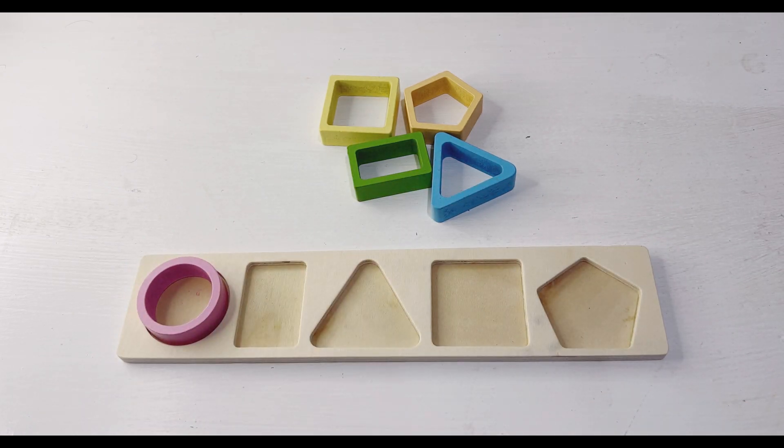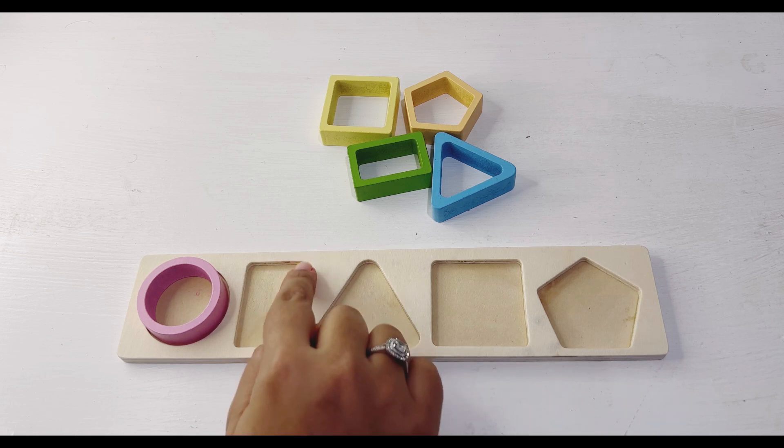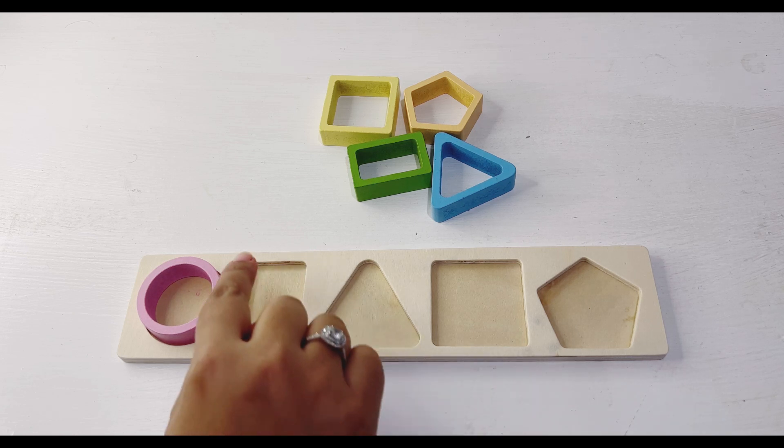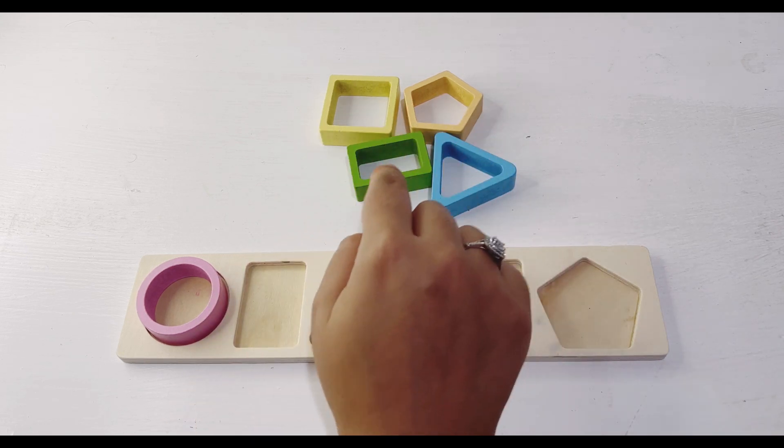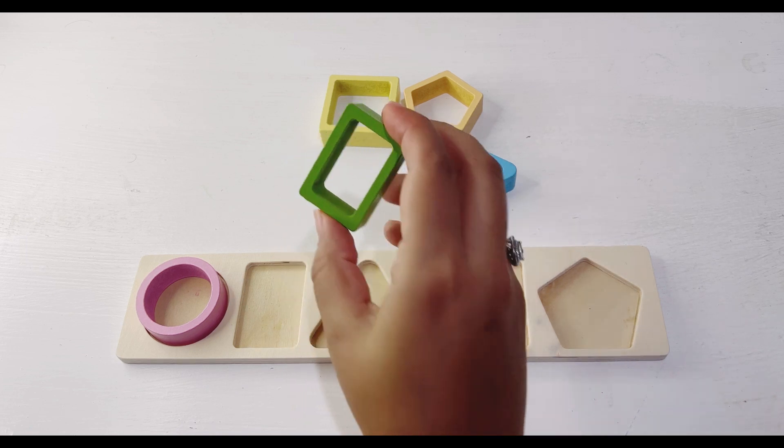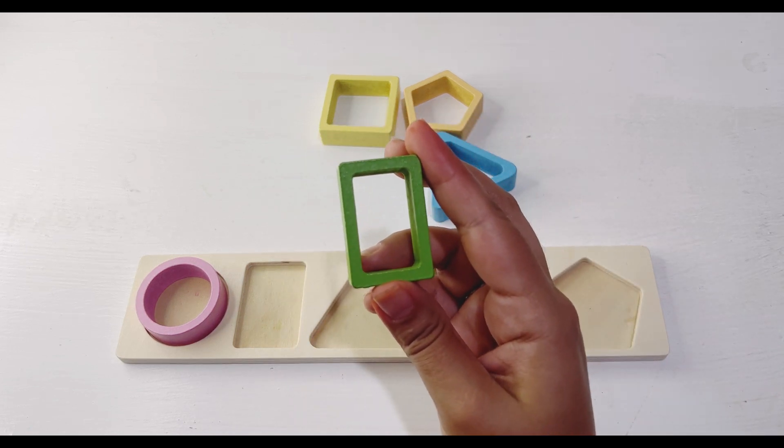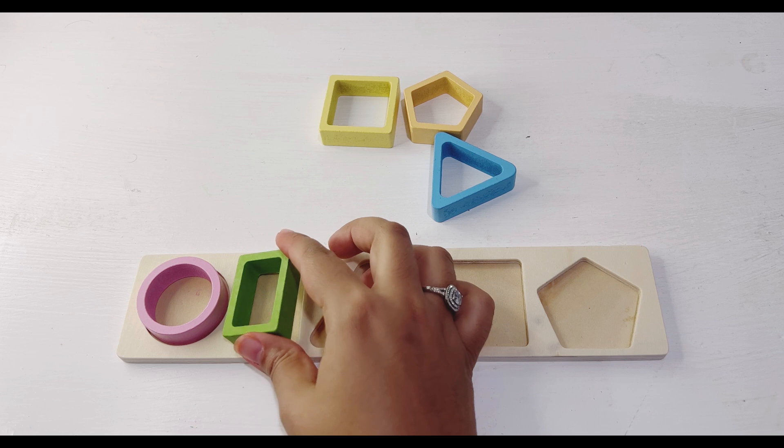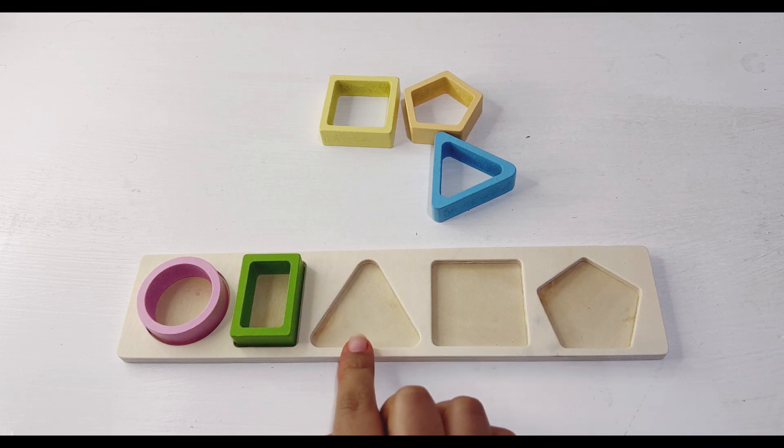Next we have a rectangle. Rectangle has two longer sides and two shorter sides. Let's find rectangle. Here you go, this is green rectangle. Let's put it in the right place.